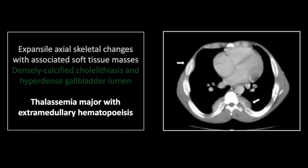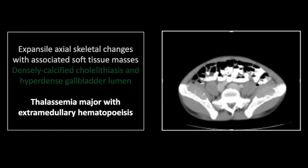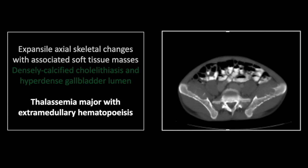You can see the expansile changes of all of the visualized skeletal structures with associated soft tissue masses on the inner aspects of the ribs and in the pelvis, as you'll see lower down. Here on the bone windows, you can see the expansion of the skeletal structures themselves, and again those adjacent soft tissue masses. In the pelvis, you can really see the prominent soft tissue masses and the erosion of the adjacent cortex, and on the bone windows you can appreciate the expansion of the visualized skeletal structures.